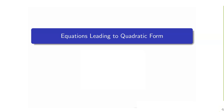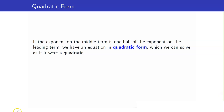In this lesson, I am going to talk about equations leading to quadratic form. There are cases wherein we will encounter equations that are not quadratic, meaning the exponent is already greater than 2. However, there are equations which are in quadratic form. When does this happen? If the exponent on the middle term is one-half of the exponent on the leading term, then we have an equation in quadratic form, and we can solve it as if it were a quadratic equation.